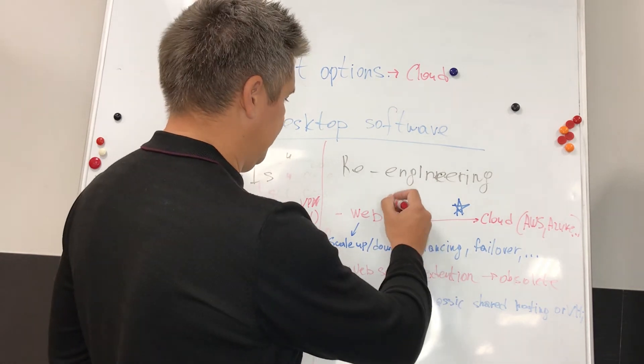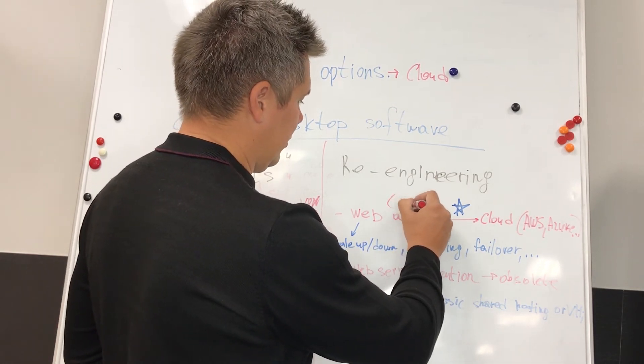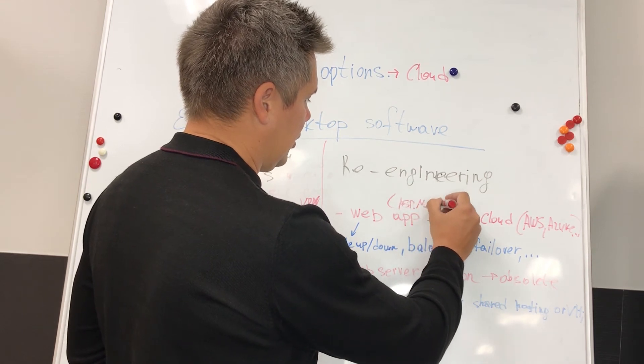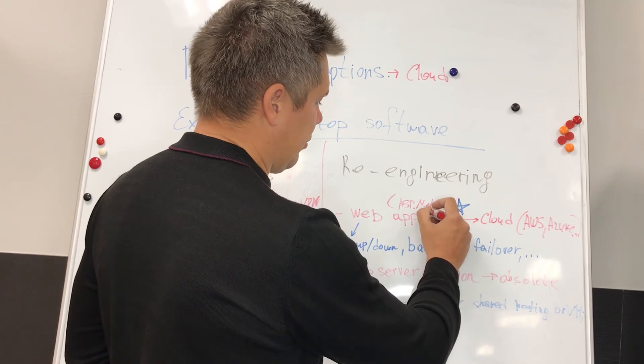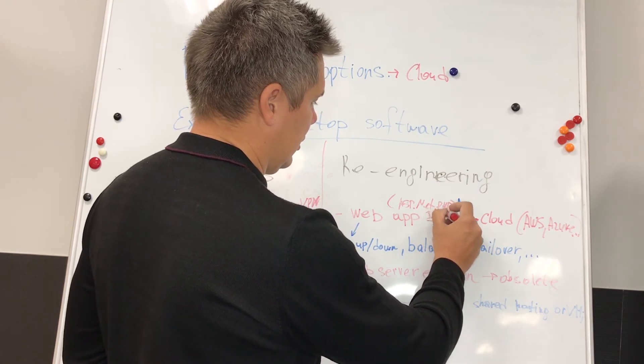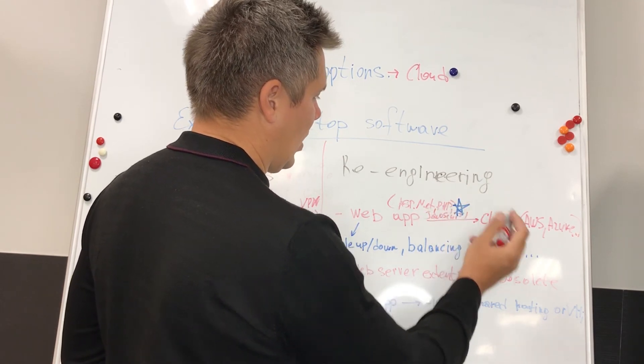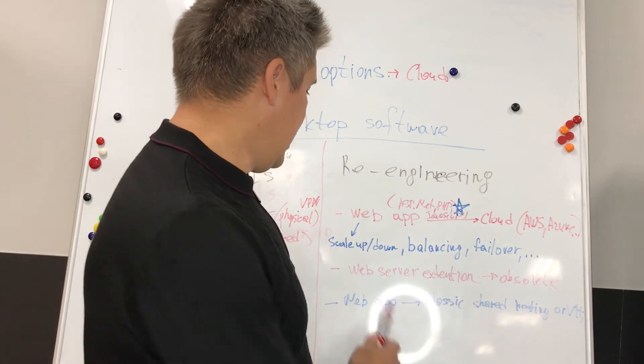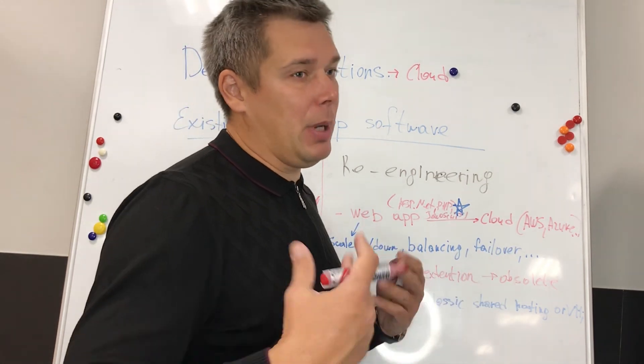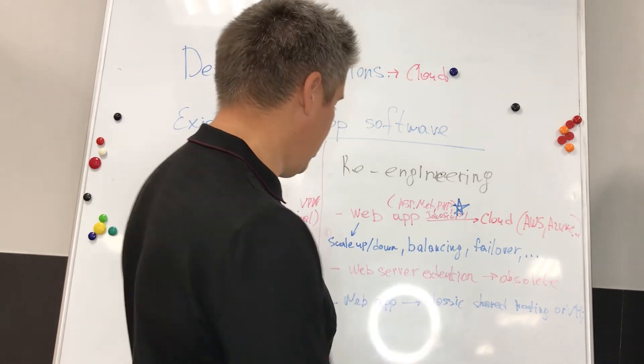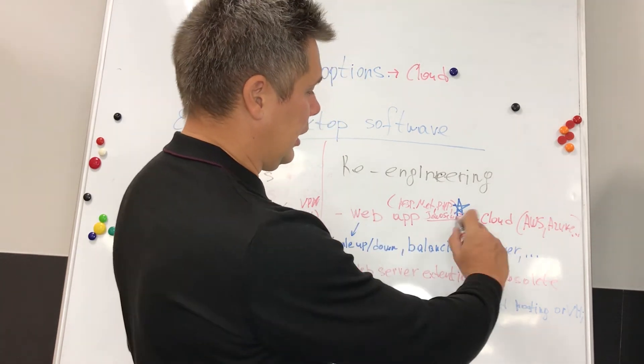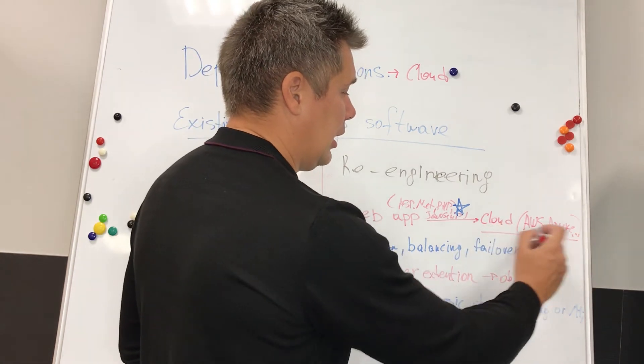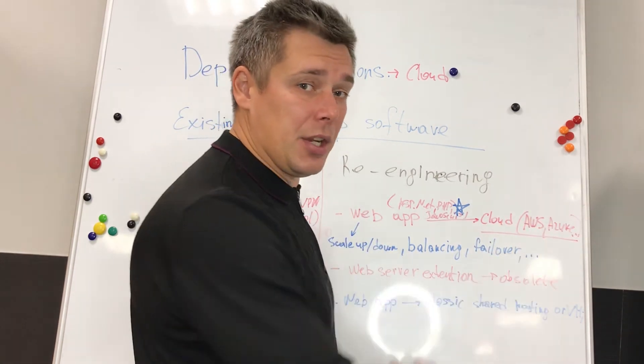But if we can re-engineer and make it as a web application, it can be ASP.NET, PHP, or JavaScript. We will deploy the application as a web application. In this case, cloud will be responsible for scale up, scale down, balancing, failover, everything. Again, I mean Amazon and Azure, for example.